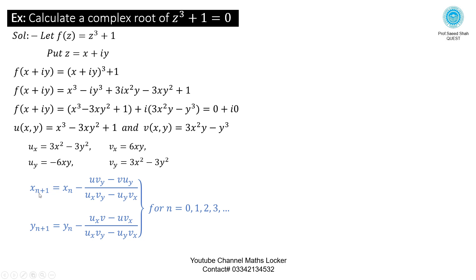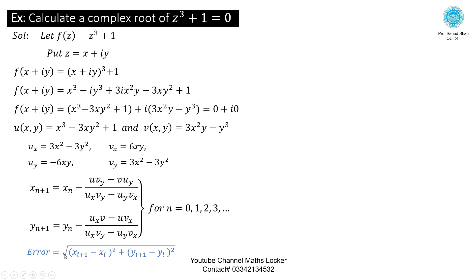Using the Newton-Raphson formula for complex roots: x_{n+1} = x_n − (u·v_y − v·u_y) / (u_x·v_y − u_y·v_x), and y_{n+1} = y_n − (u_x·v − u·v_x) / (u_x·v_y − u_y·v_x), for n = 0, 1, 2, 3. The error formula is: error = √[(x_{i+1} − x_i)² + (y_{i+1} − y_i)²].